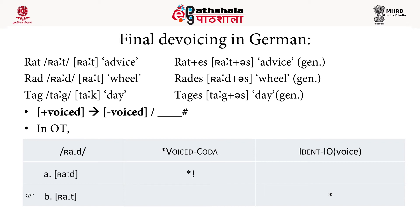The important markedness constraint here is *VOICED-CODA — there should not be any voiced coda — which dominates the faithfulness constraint IDENT-IO(voice), which retains voicing from input to output. So the constraint ranking is *VOICED-CODA >> IDENT-IO(voice). For input /rad/, candidates are [rad] and [rat]. Candidate [rad] fatally violates *VOICED-CODA because the coda /d/ is voiced, while [rat] only violates the lower-ranked IDENT-IO(voice). Therefore [rat] is chosen as the optimal candidate.